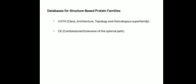CE, or Combinatorial Extension of the Optimal Path, provides structural neighbors of the PDB entries with structure-structure alignments and three-dimensional superposition. FSSP stands for Fold Classification Based on Structure-Structure Alignment of Proteins; it features a protein family tree and a domain dictionary in addition to whole chain-based classification, sequence neighbors and multiple structure alignment.